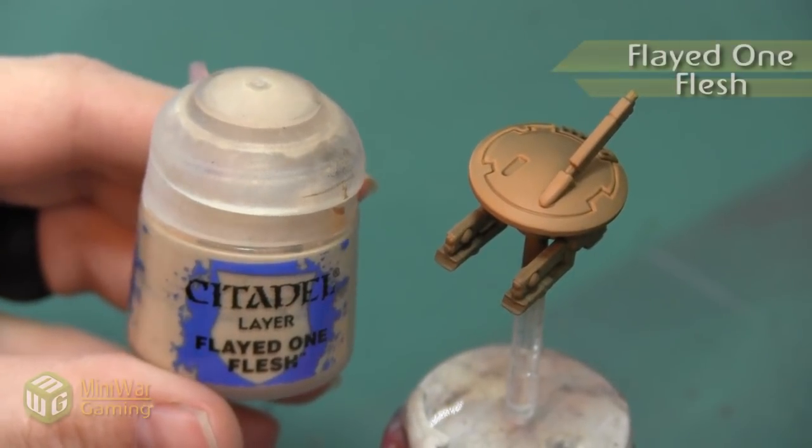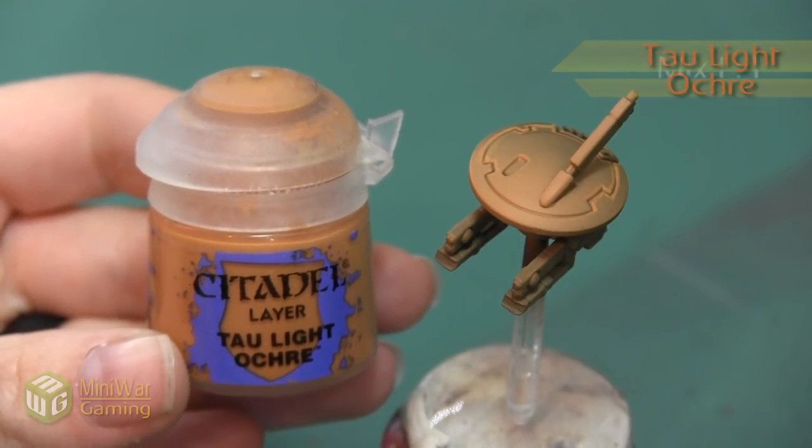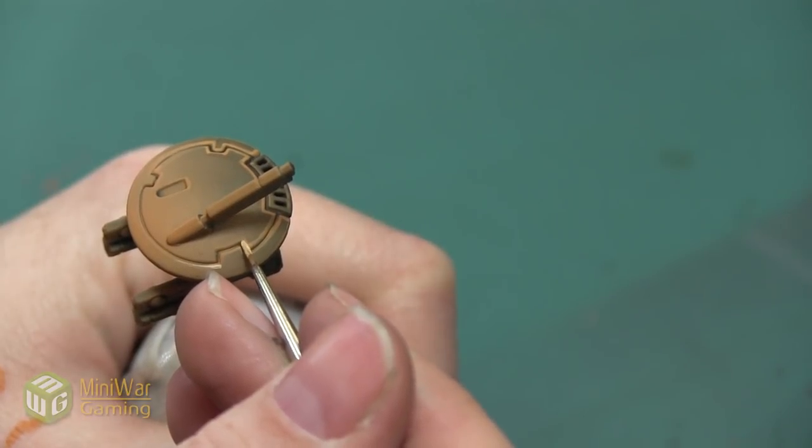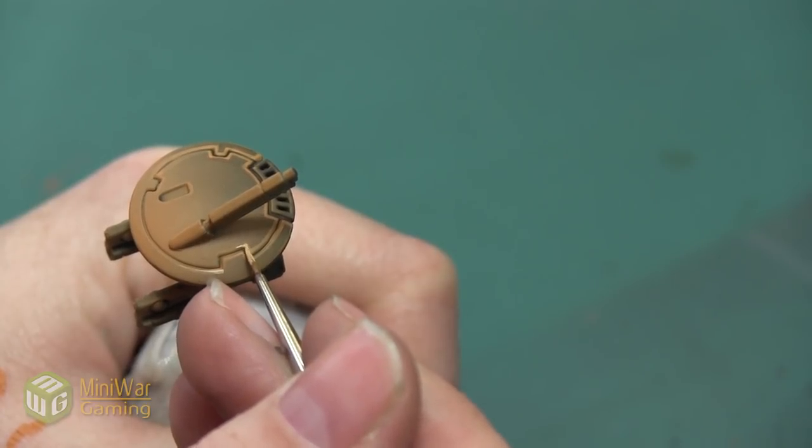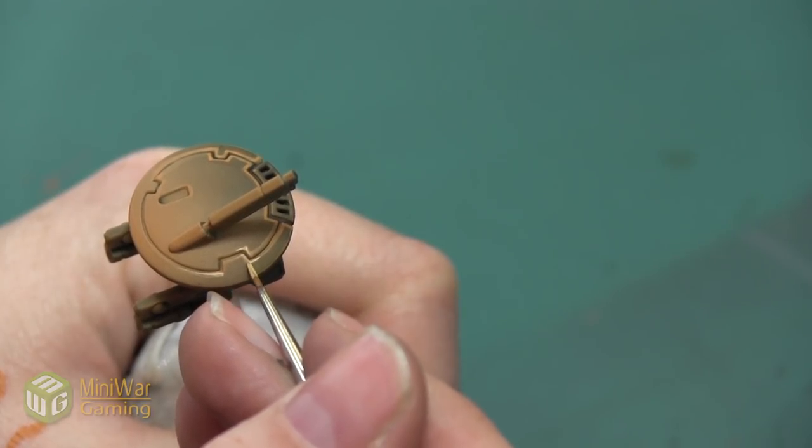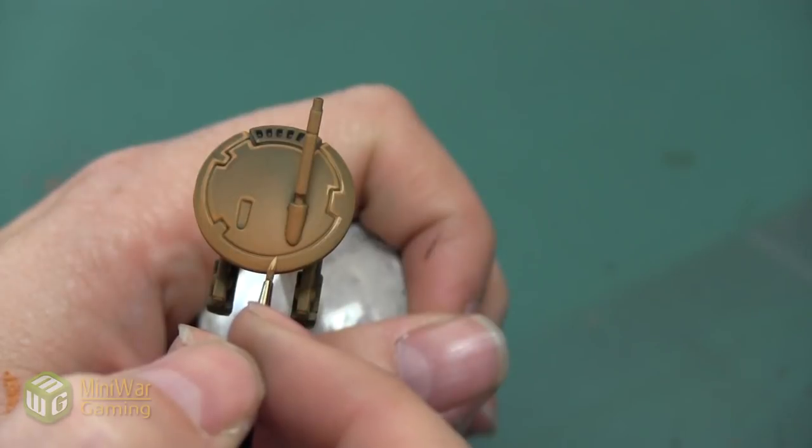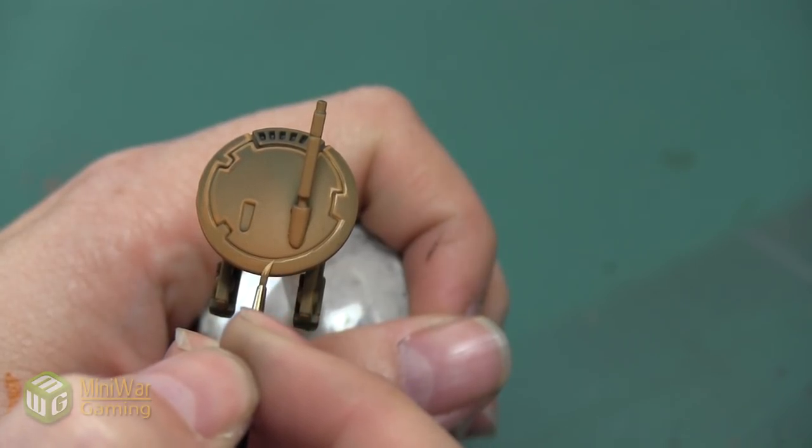Next we're going to take a little bit of Flayed One Flesh and we're going to mix it into our Tau Light Ochre about 50-50. I'm going to begin by applying this color to the corners of all the lines on the outer edge of the drone, and then I also want to get the area at the very front. This whole arc on the very front of the drone I want to highlight with this lighter color, and I want to get areas like the top of the antenna and kind of anywhere else that I feel like needs to be just a little bit brighter.